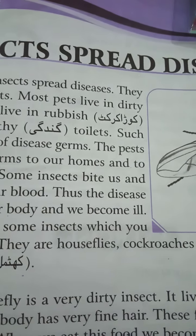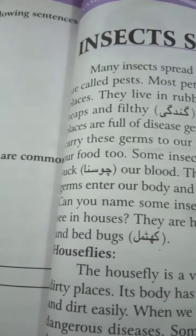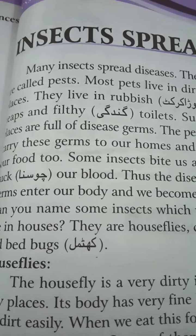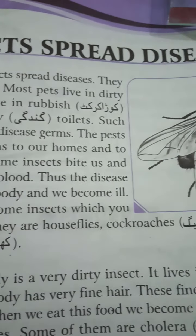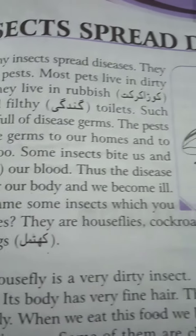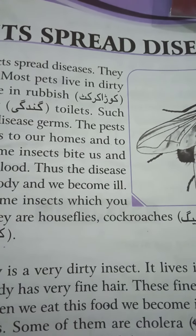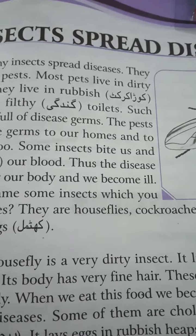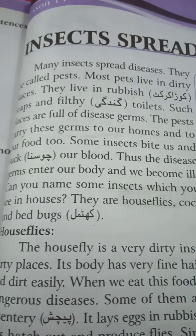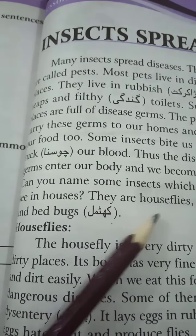Many insects spread diseases. They are called pests. Most pests live in dirty places. They live in rubbish. These places are full of disease germs. The pests carry these germs to our homes and to our food too.